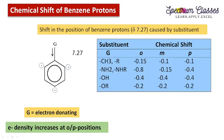For the NH2 or NHR group, the effect is much clearer. At the ortho position it is 7.27 − 0.8, at the meta position it is 7.27 − 0.15, and at the para position it is 7.27 − 0.4. The values −0.8, −0.4, and −0.15 clearly show that meta positions are less shielded than ortho and para. The ortho effect is more prominent because the electron donating group is nearest to that position. For OH and OR groups all positions are similarly shifted. This gives a brief idea for solving related questions.